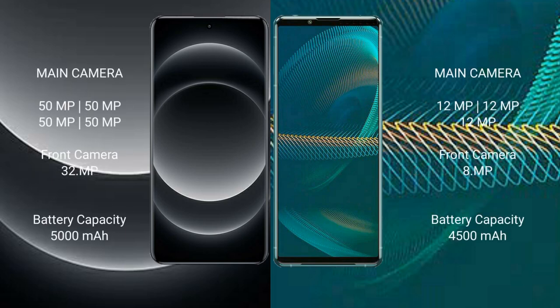Xiaomi 14 Ultra comes with a rear quad camera setup: 50MP, 50MP, 50MP, 50MP, and a 32MP front camera. Sony Xperia 5 Mark III comes with a rear triple camera setup: 12MP, 12MP, 12MP, and an 8MP front camera.